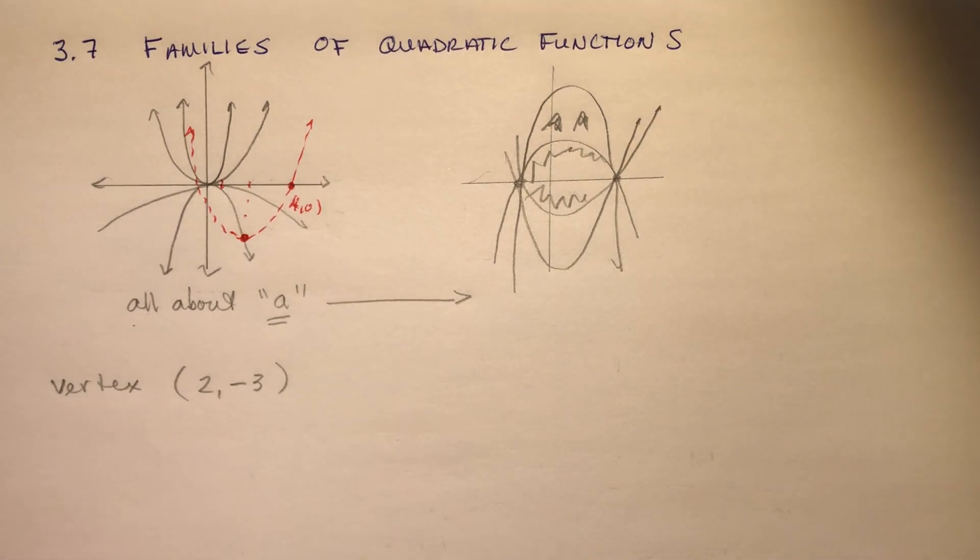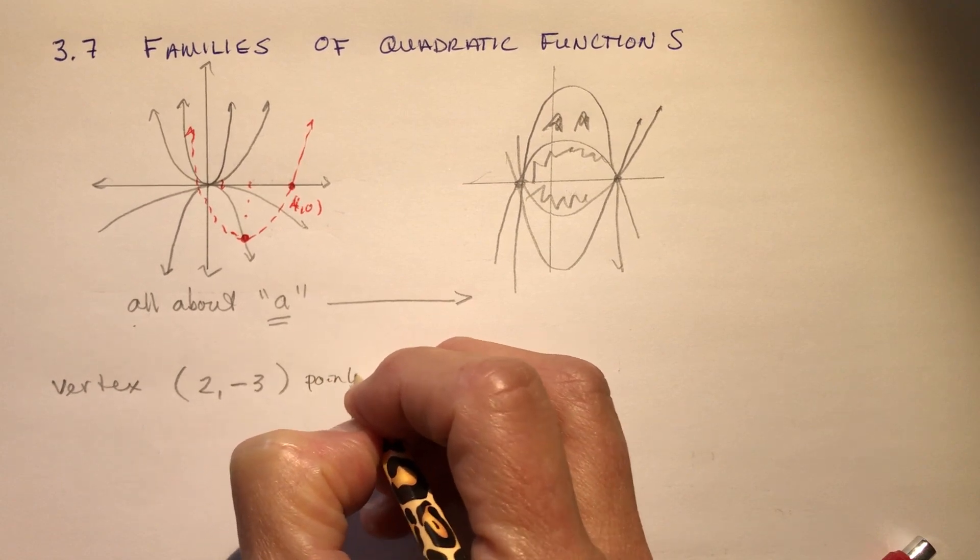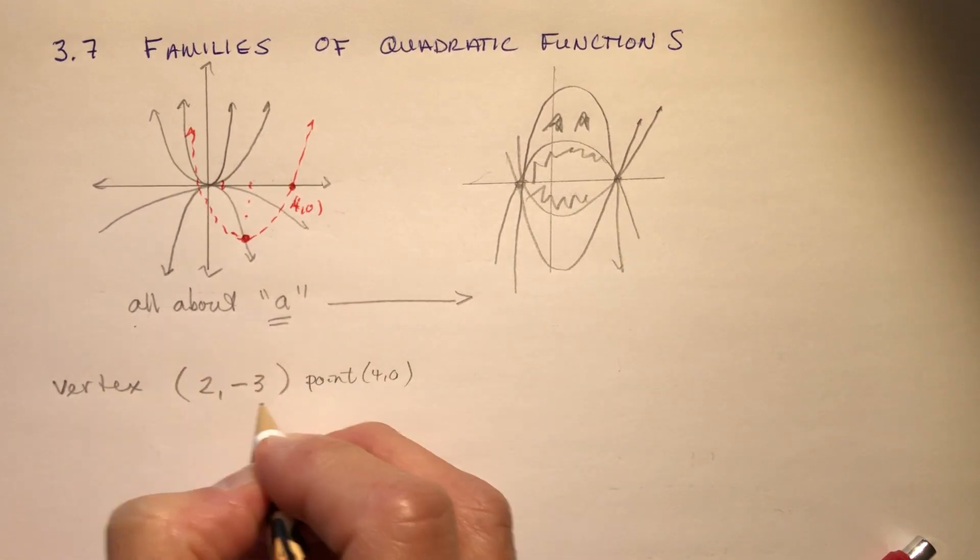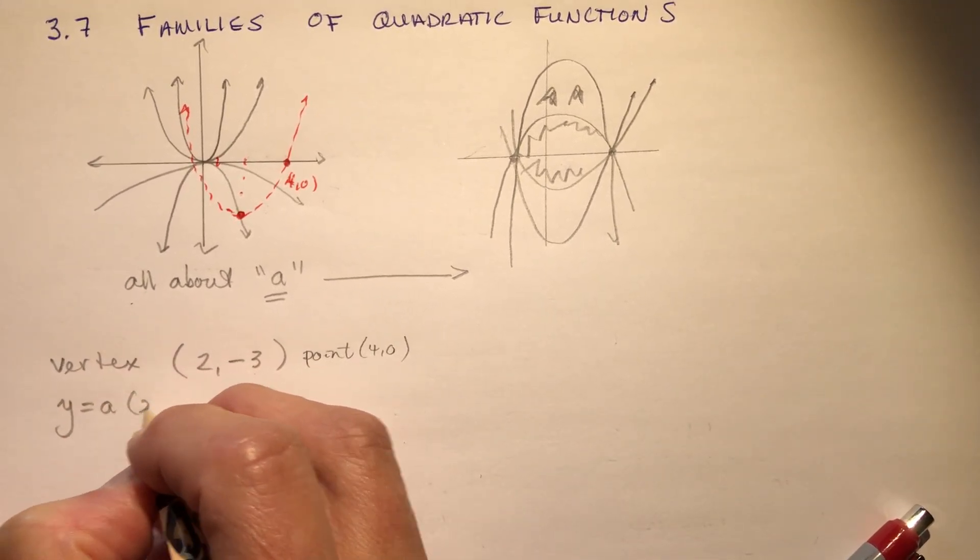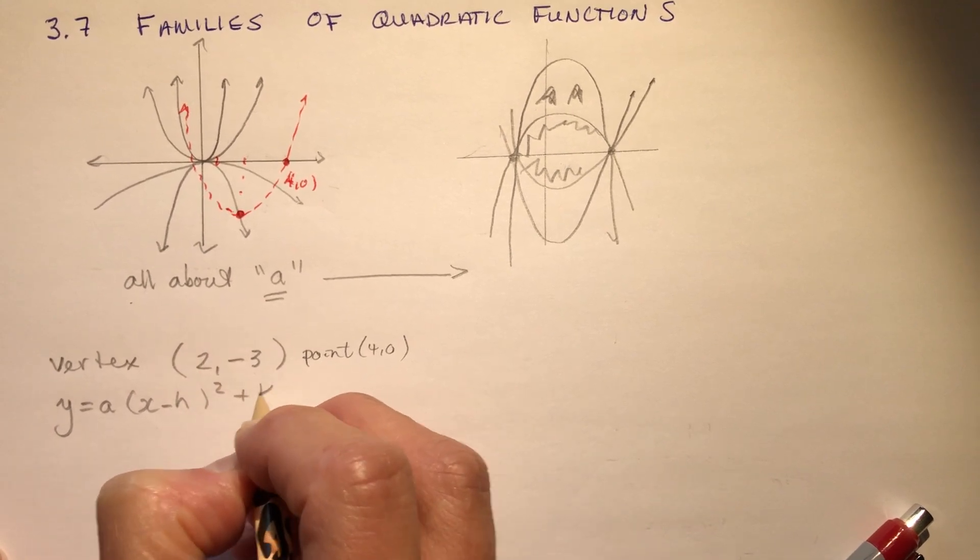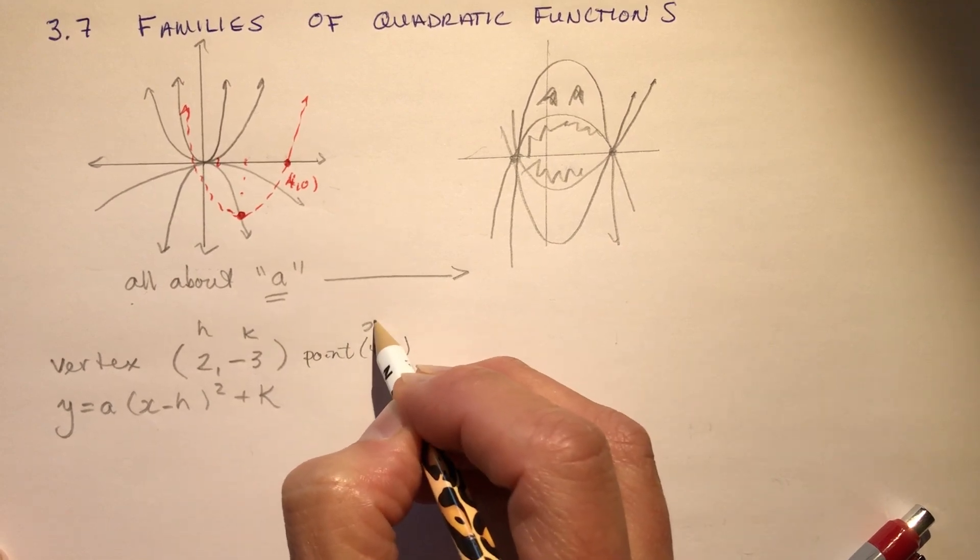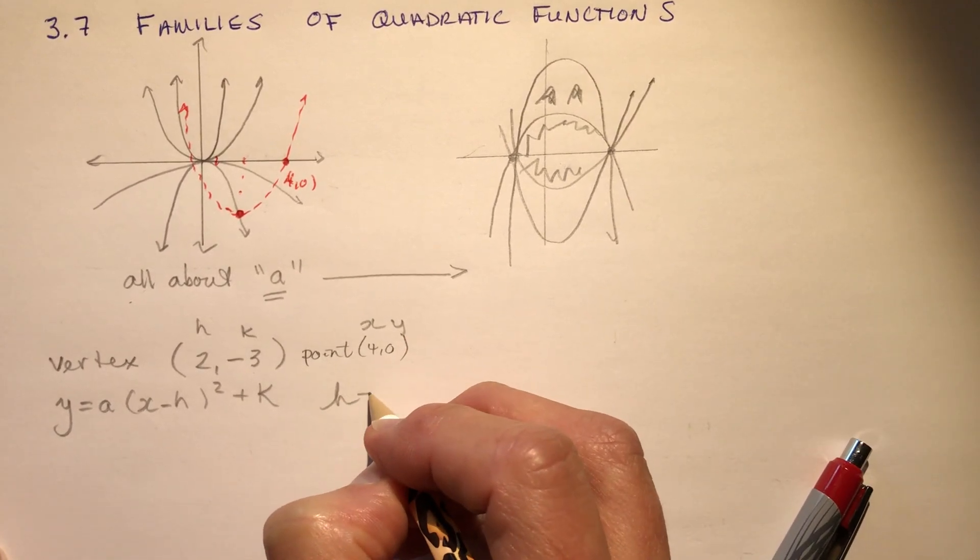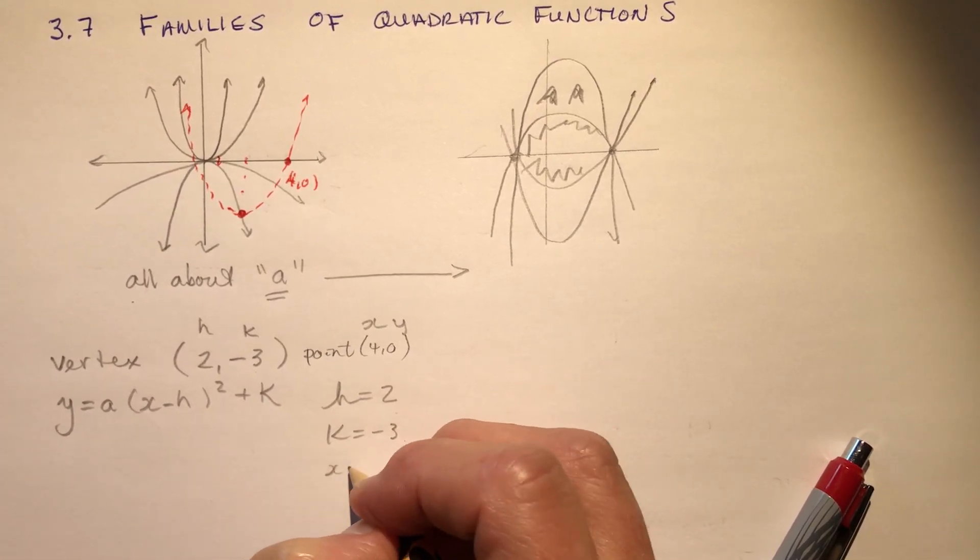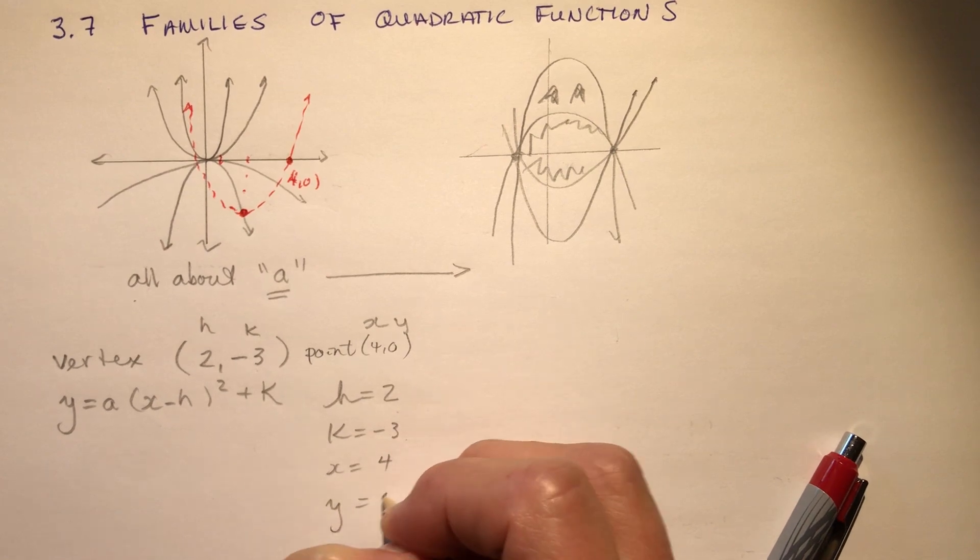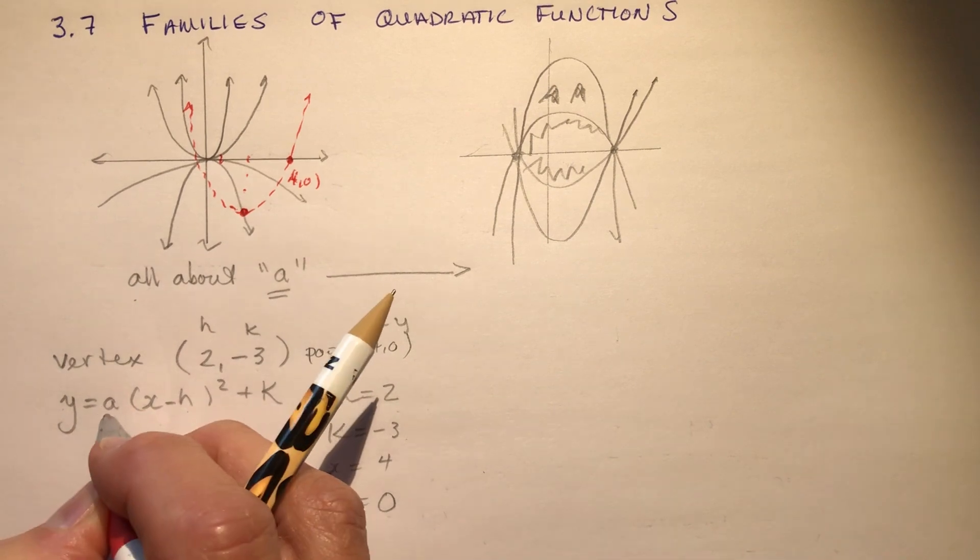So if I asked you to find me the equation of this parabola, you'd say okay, well, I know the vertex and I know a point. So I have a point that is four, zero. And because I have the vertex, then I'm going to use vertex form. Fancy that. y equals a times x minus h squared plus k. And this is my h, and this is my k, and this is an x, and this is a y. So I have h is two, I have k is minus three, I have x equals four, and I have y equals zero. So I have everything I need for this equation except for the a.